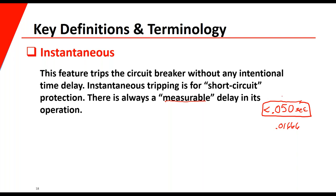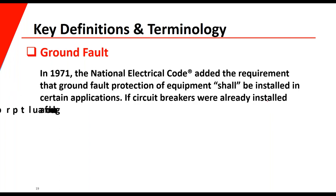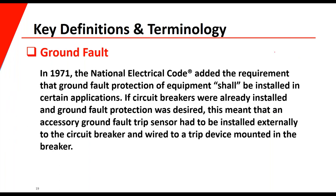You can often hear a breaker that's slow — it could be a lubrication problem. Back in 1971, the National Electric Code added the requirement of ground fault protection of equipment in certain applications. If a breaker was already installed and didn't have ground fault protection, an accessory ground fault trip sensor had to be installed externally to the circuit breaker and wired to the trip device mounted in the breaker. Most trip devices can come with the ground fault feature, but don't necessarily have to have it.